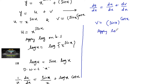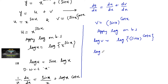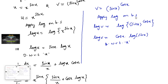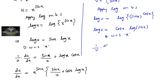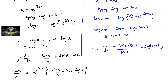Apply logarithm. We have log v = log of sin x to the power of cos x, which gives log v = cos x into log of sin x. Now differentiate with respect to x. We get 1 upon v into dv/dx = cos x into differentiation of log sin x, using product rule and chain rule: cos x into (1 upon sin x) into cos x plus log of sin x into differentiation of cos x.